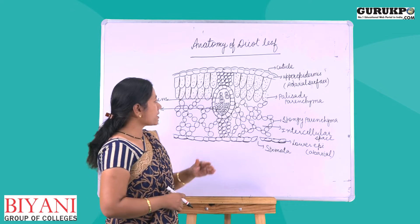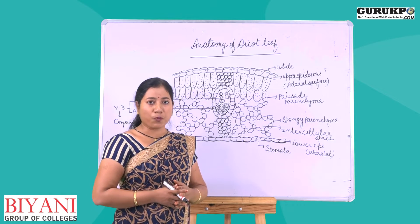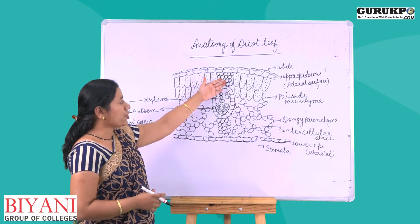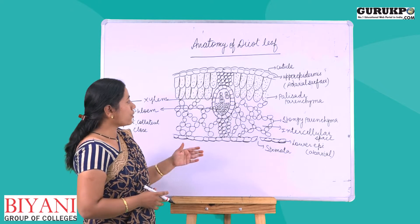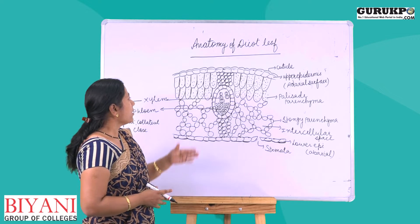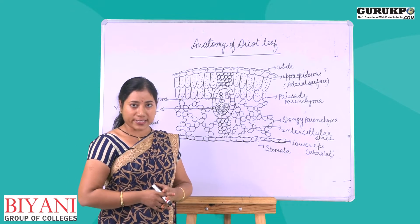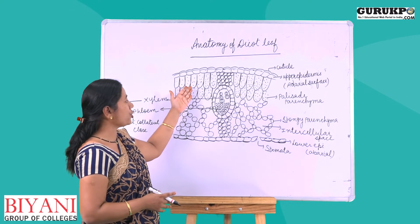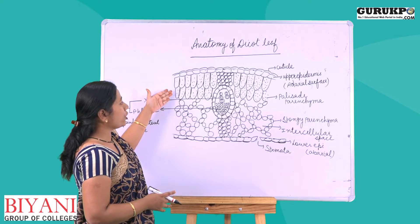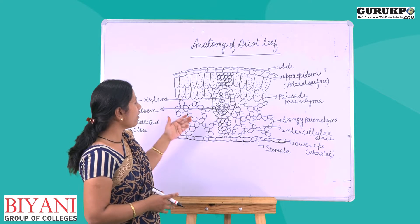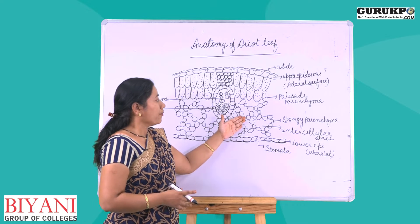Next is mesophyll tissue. The mesophyll tissue is divided into two parts: first is palisade parenchyma and second is spongy parenchyma. Palisade parenchyma cells are elongated, tightly arranged, and contain chloroplasts. They are arranged in two layers.